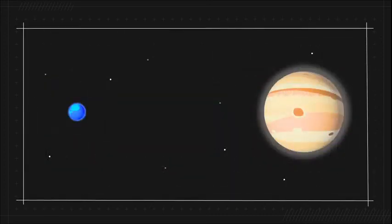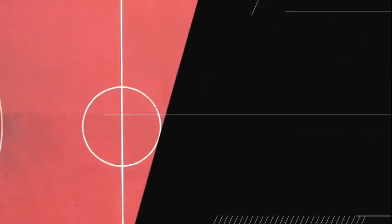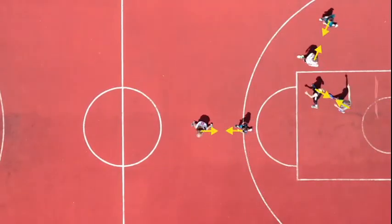But if Jupiter has such a strong gravitational pull, how is it that we stay on Earth and don't just get pulled into Jupiter? Well, that's because mass isn't the only thing that determines gravitational pull. Distance also plays a role. The closer two objects are to each other, the stronger the gravitational pull between them will be.